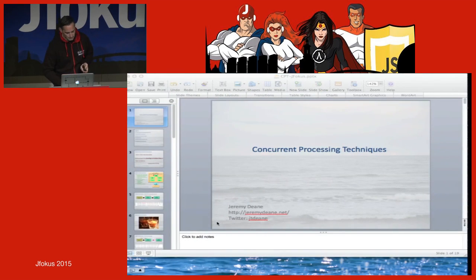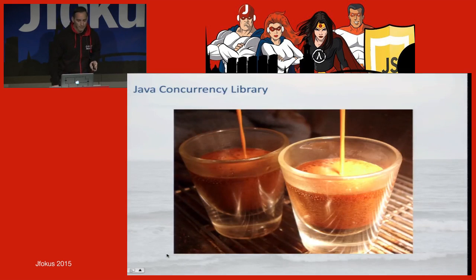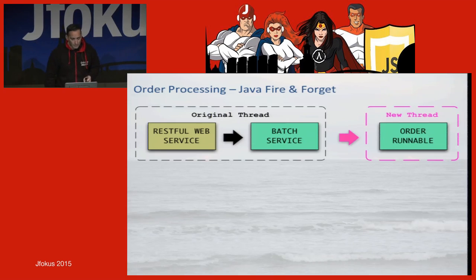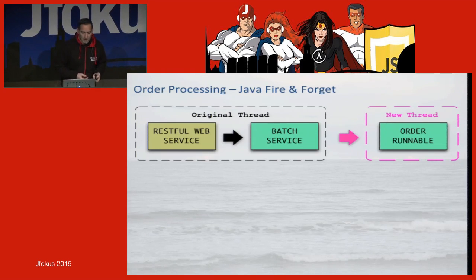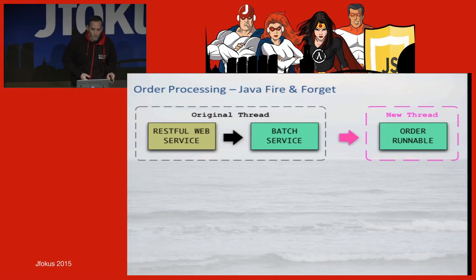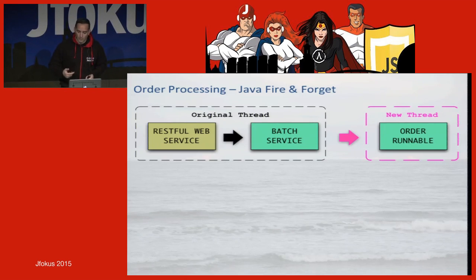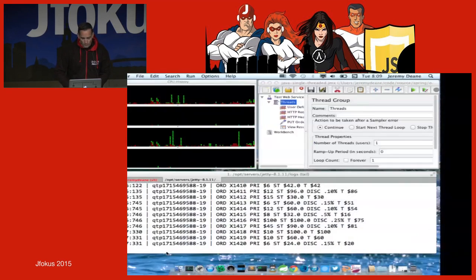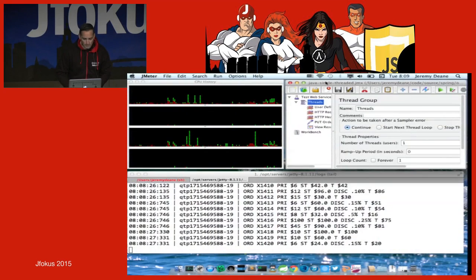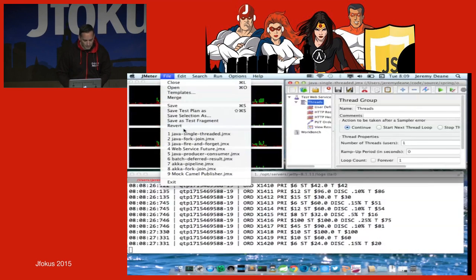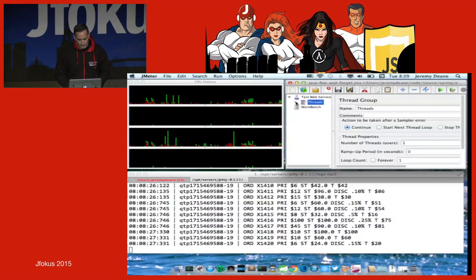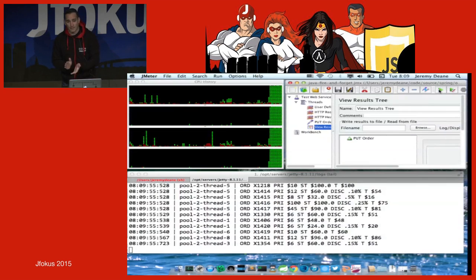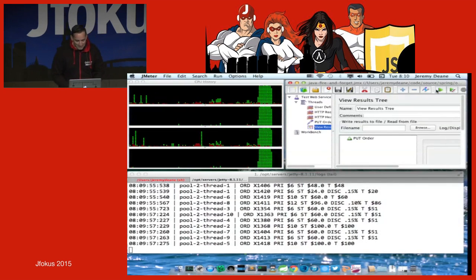One thing we can do is look at the Java concurrency library, which came out in Java 5 and was really improved in 6 and 7. We're going to implement the fire and forget pattern in Java. I don't really need to return anything, so I'll set up a new thread for each order using a runnable, and what we'll see is a distribution across those threads. Let's run it and see the difference. Running Java fire and forget — what we'll see is a nice distribution across all four cores. That's a thing of beauty; that deserves a hand.